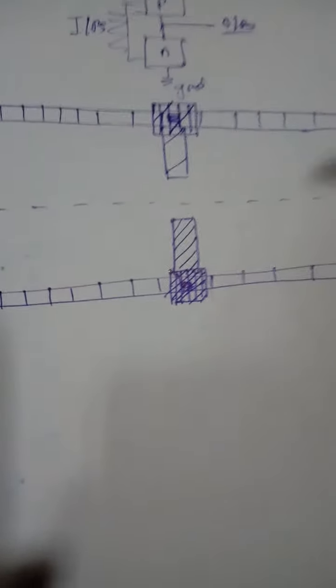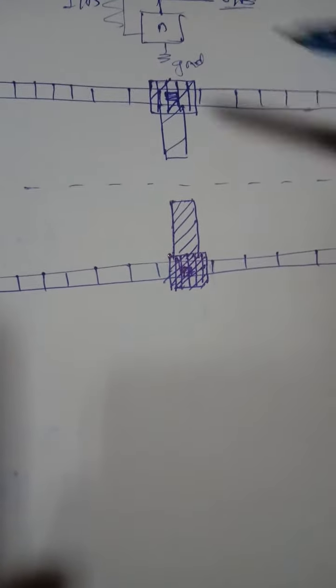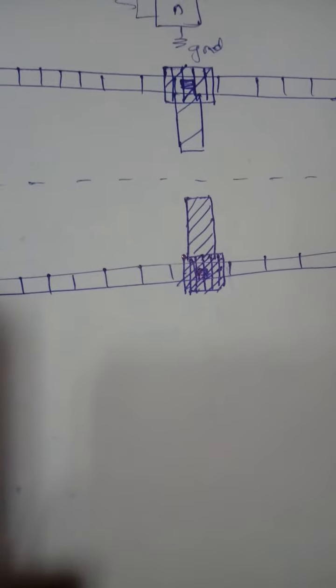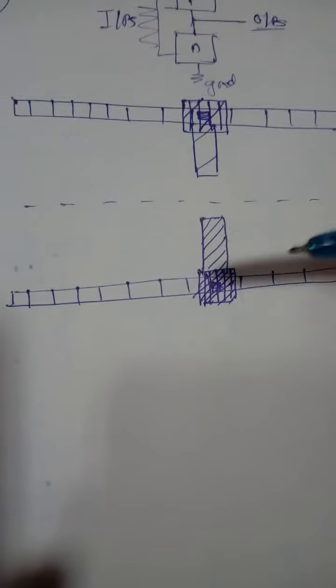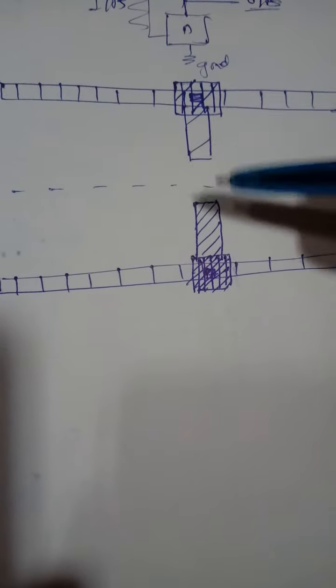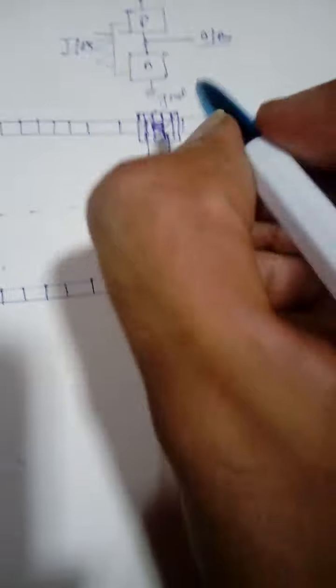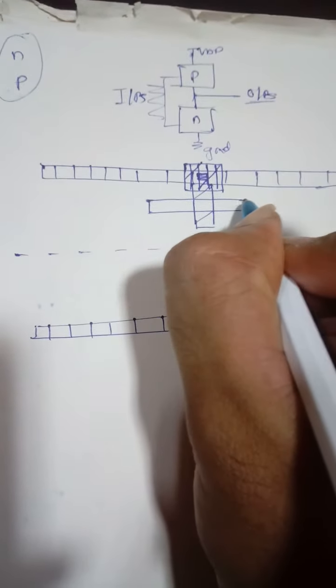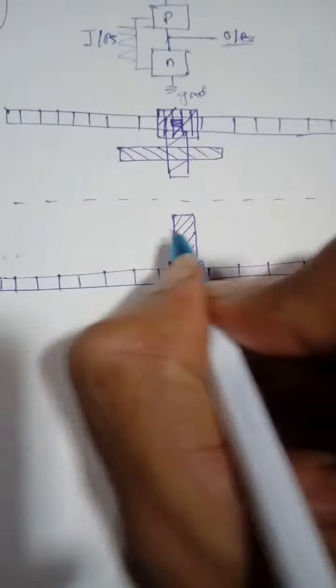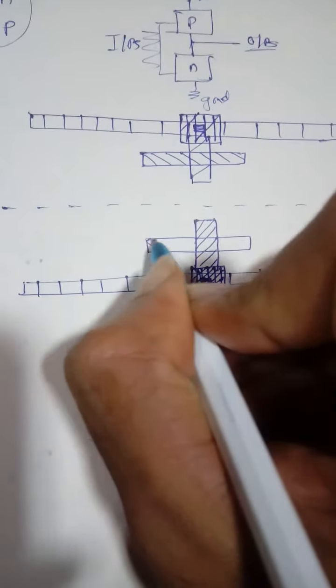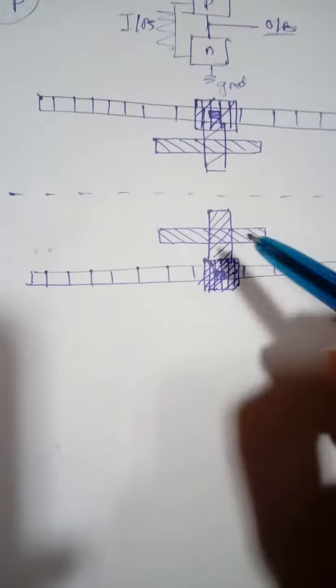Above the demarcation line you have the N-well where only the P channel can form, and below the demarcation line you have the P-well where only the N channel can form. I am restricting the P diffusion region up to the demarcation line, and similarly restricting the N diffusion region below it. The transistor is formed when the polysilicon crosses with the diffusion — I'll draw the polysilicon crossing the P+ diffusion to form the P transistor, and crossing the N+ diffusion to form the N transistor.